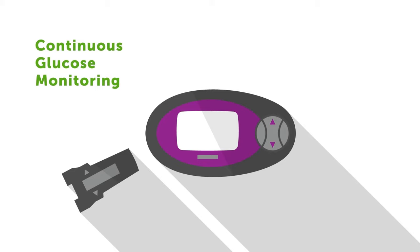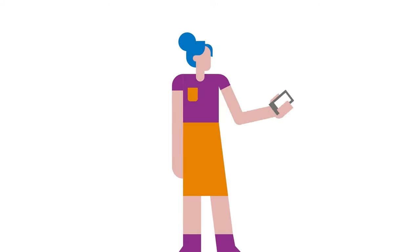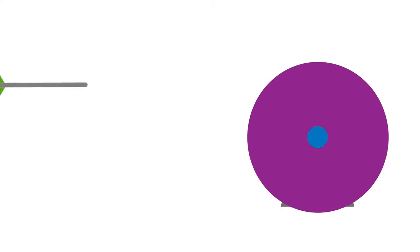At Dexcom, the first real-time CGM for patients was introduced in 2006 with the so-called STS, short-term sensor. This technology allows people with diabetes and healthcare professionals to monitor glucose readings on a receiving device or app, allowing analysis and the possibility of more accurate treatment decisions.